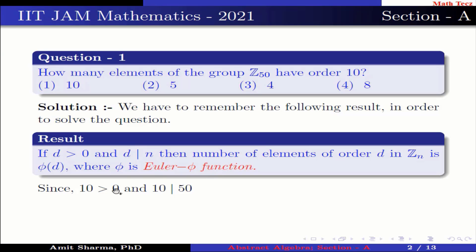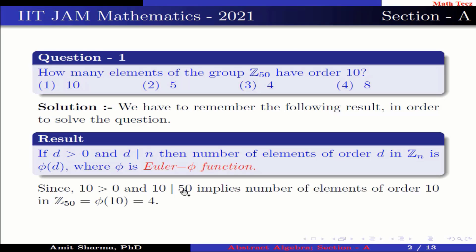Since 10 is greater than 0 and 10 divides 50, this implies the number of elements of order 10 in Z50 is phi(10), which is 4. Hence option 3 is correct.